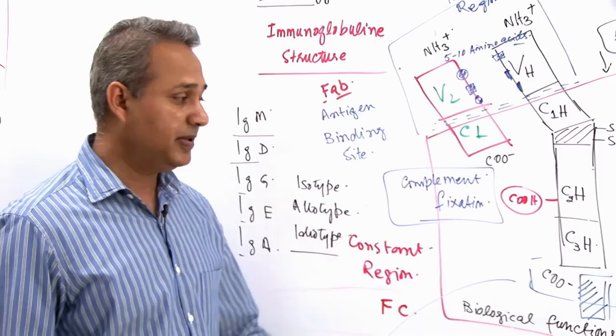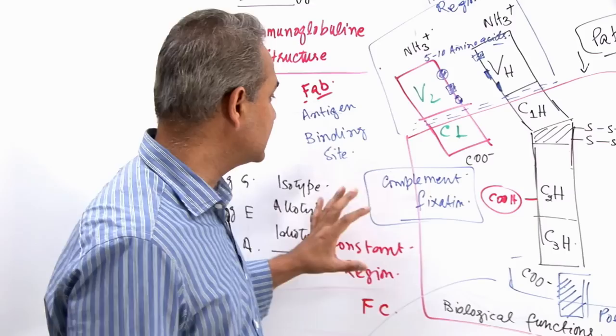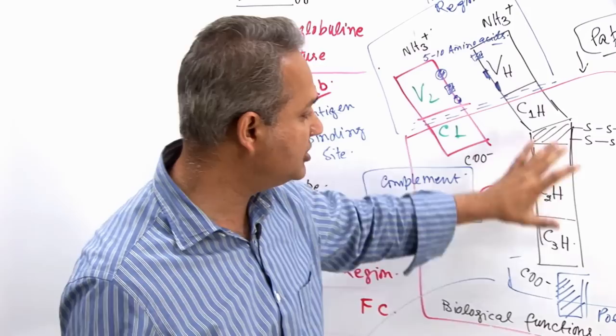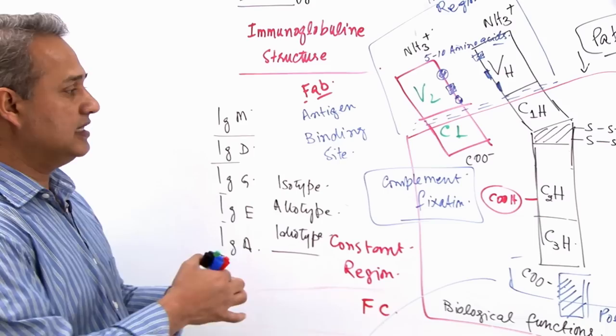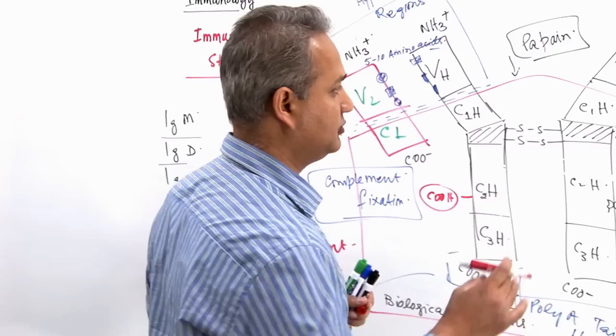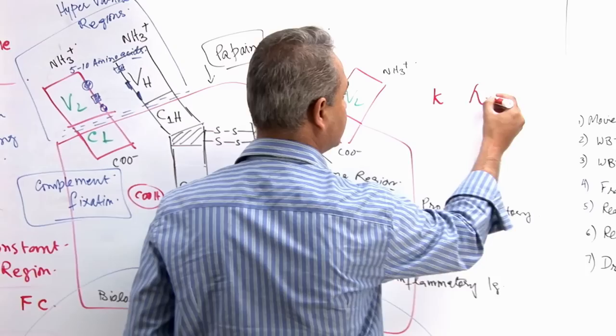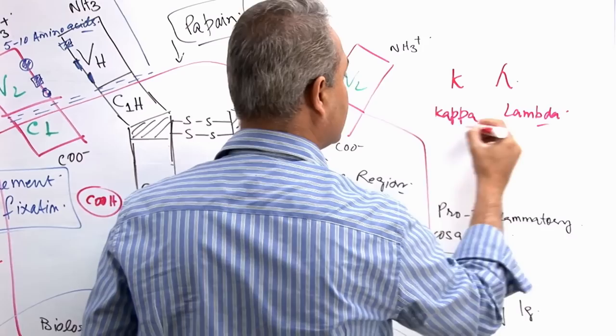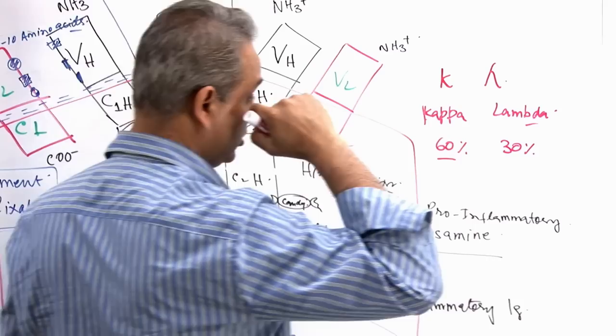Now, why I wanted to discuss this is that the light chain also is of 2 types. Just like heavy chain is of 5 types, M, D, G, E and A, the light chain has lambda and kappa types. So, I will go here. We have the kappa type and we have lambda type. So, kappa and lambda. Kappa are usually about 60% or more and lambda are about 30% or less.